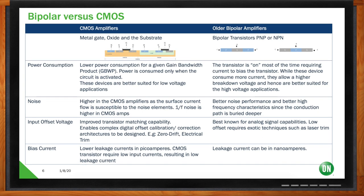When you're picking a bipolar amplifier like the LM324s or 358s versus a CMOS amplifier like On Semiconductor's NCS20062, there are basic trade-offs in performance. On power consumption: as gain bandwidth goes up, power consumption also goes up. With CMOS amplifiers, power is consumed only when the circuit is activated. With bipolar amplifiers, because current is required to bias the transistor, it's always consuming current — bipolar imposes this power tax all of the time.